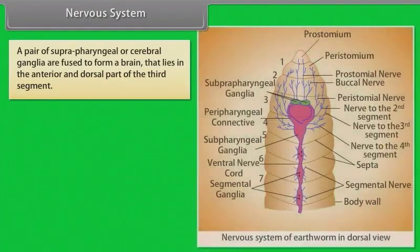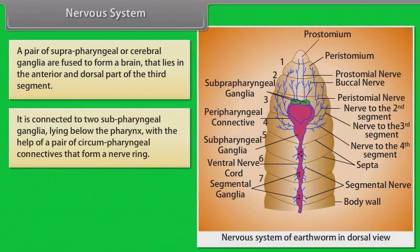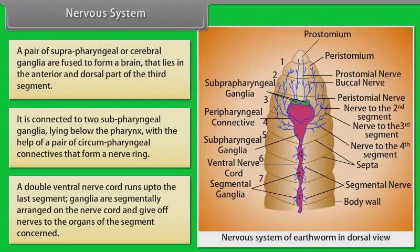A pair of suprapharyngeal or cerebral ganglia are fused to form a brain, lying in the anterior dorsal part of the third segment. It is connected to two subpharyngeal ganglia below the pharynx by a pair of circumpharyngeal connectives that form a nerve ring. A double ventral nerve cord runs up to the last segment. Ganglia are segmentally arranged on the nerve cord and give off nerves to the organs of each segment.